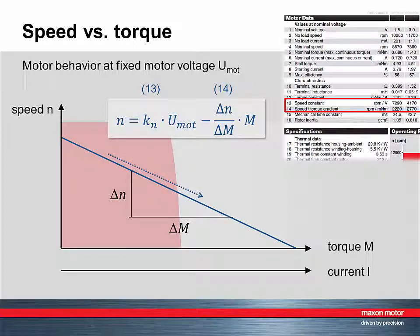And if the torque becomes too high, the motor cannot rotate anymore. It stalls. This is the far end of the speed torque line.